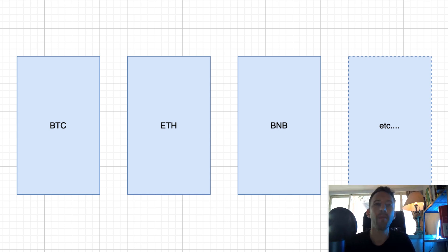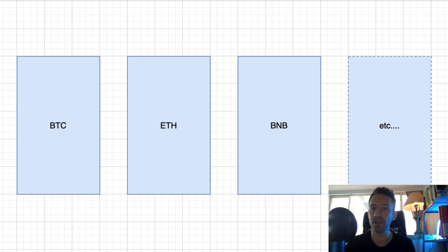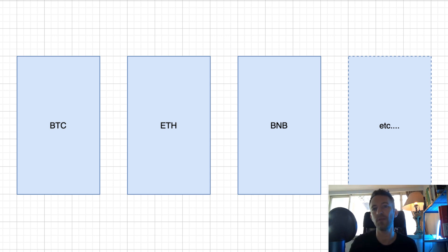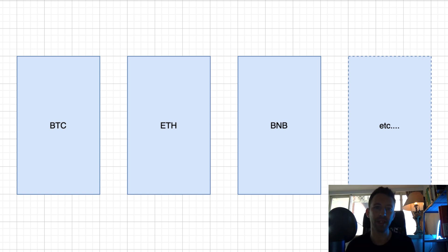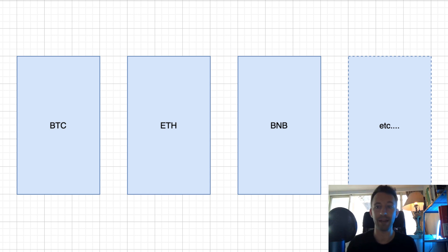This model works well for centralized exchanges with a limited number of markets, but on the blockchain we have many more assets to trade and this model doesn't work well. The main reason is that to be a market maker you need a lot of capital and a lot of technical expertise, as you need to constantly readjust your limit orders to not lose money when the price changes. That's why we need something more efficient for the blockchain — that's when the automated market maker comes in.